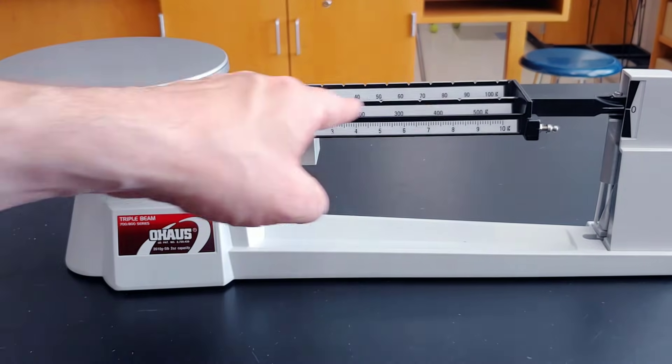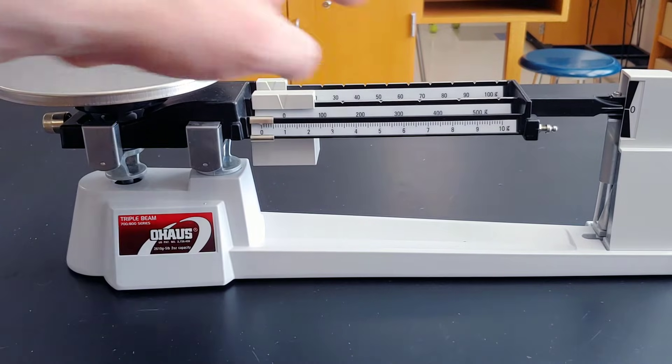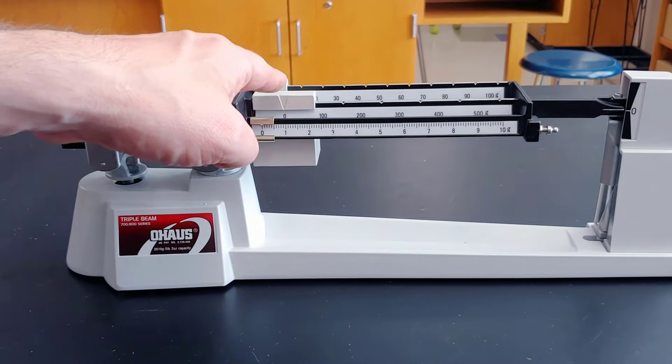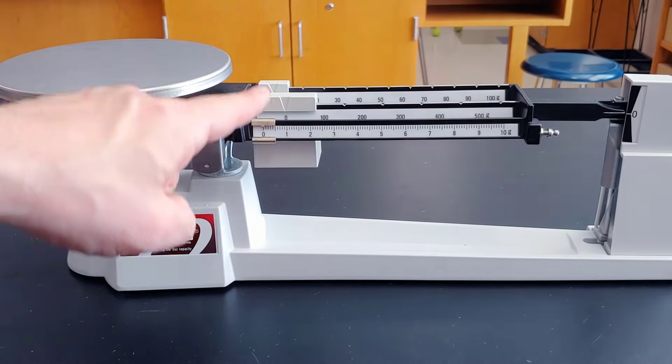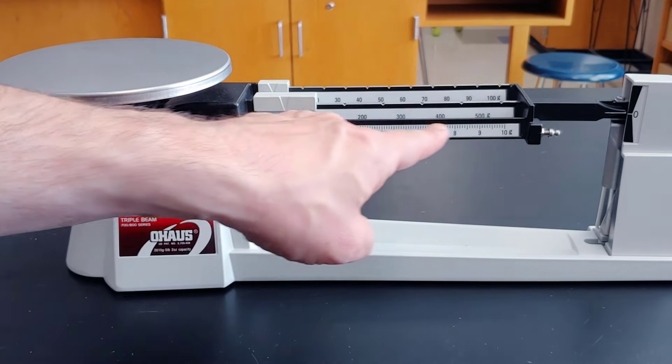These are the arms. You'll notice there are three arms. The one with the biggest weight is in the middle, the next smallest in the back, and the smallest are in the front.